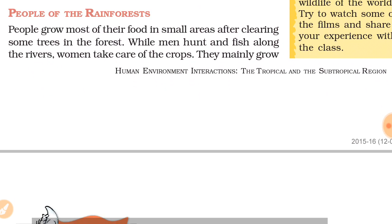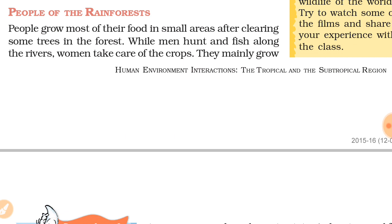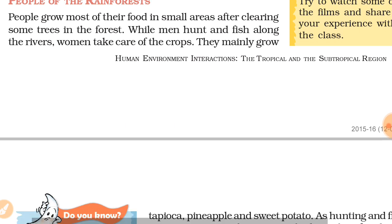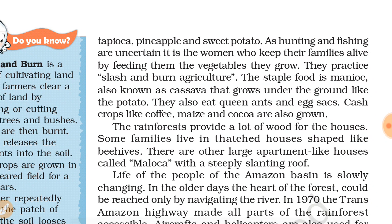The people of the rainforest are hunter-gatherers who search for food and hunt. Men hunt and do fishing, while women grow crops such as tapioca, pineapples, sweet potatoes, and tomatoes - crops which were also brought by the Portuguese. These are native species. As hunting and fishing are uncertain, women and their families grow vegetables and other things.